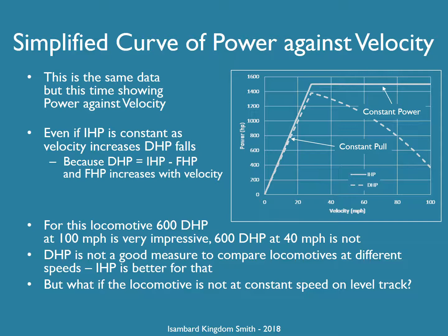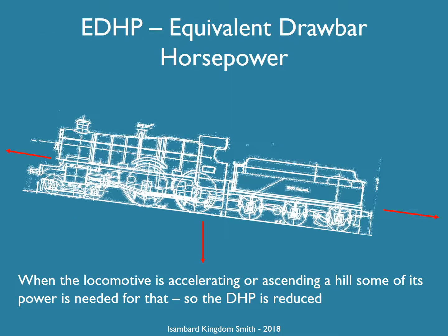Everything said so far is based on the assumption that the locomotive is moving at constant speed on level track. This is where we start talking about equivalent drawbar horsepower. When the locomotive is accelerating or going up a hill, some of the locomotive's power is needed either to accelerate its own mass or to raise its own mass against gravity, so there's less drawbar horsepower.